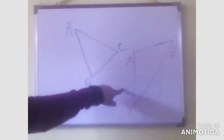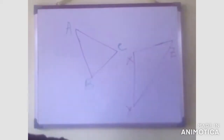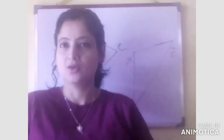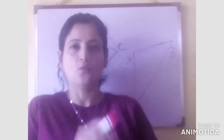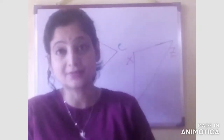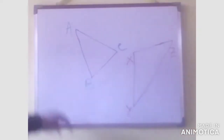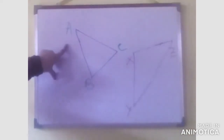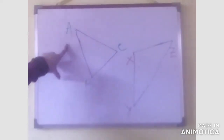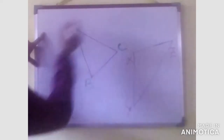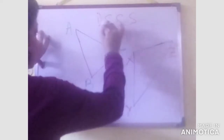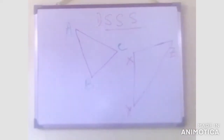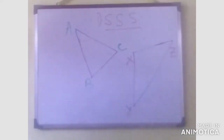To prove their congruency, I already told that there are four conditions, so one of them we have to satisfy. Only then we can say yes, they are congruent. The first condition is SSS. S, S, S — the full form is side, side, side.